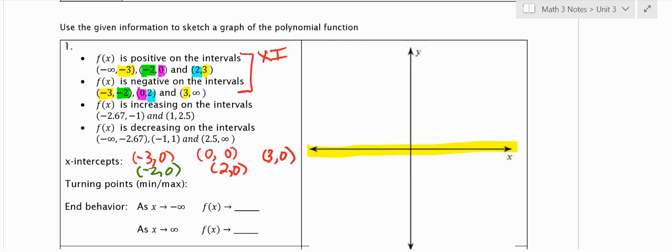The first thing is we want to plot those on our graph. So this will be 1, 2, 3. So I'll have my negative 3 right here. I'm going to have negative 2, 0. I have 0, 0.